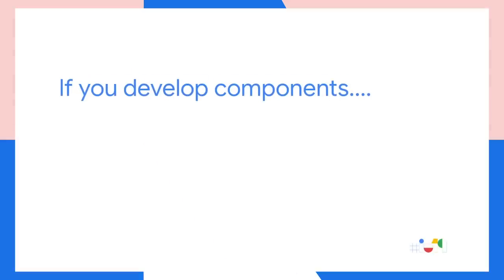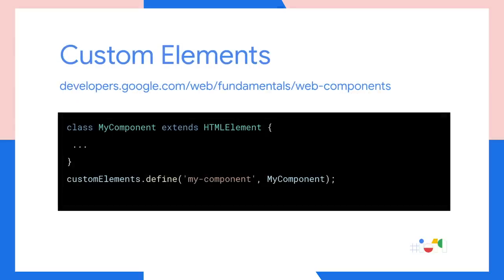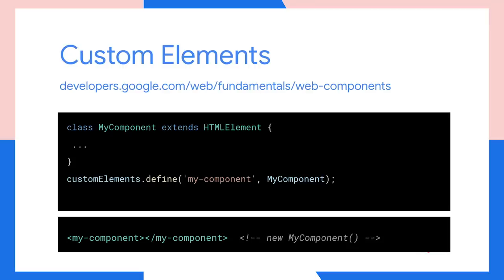If you're developing a design system for your company that needs to be consumed in a lot of different stacks, or vending a specialized component library that you want used in any environment, or if you need to add interactivity to HTML-based content from a CMS, consider authoring your components using web components. You can start building web components today using the native custom element API shipping in the browser — just make a class that extends HTMLElement and register it against an HTML tag name with the browser's custom elements API, and the browser will automatically create an instance of your class and call the lifecycle callbacks on it whenever the HTML tag is created.